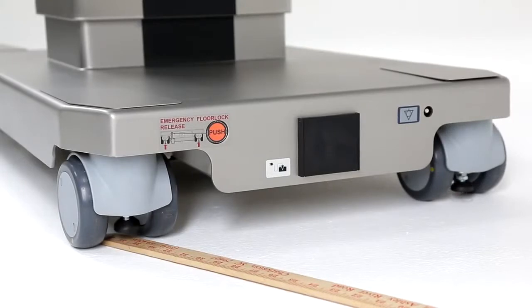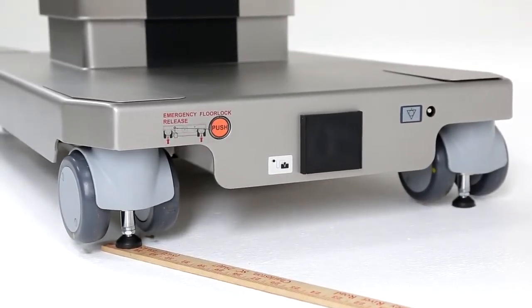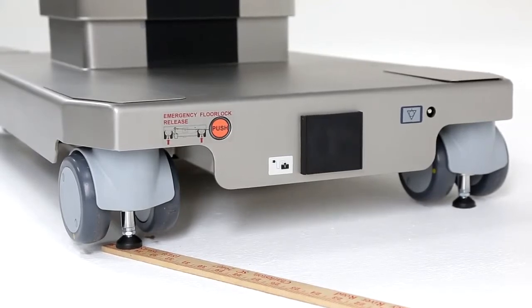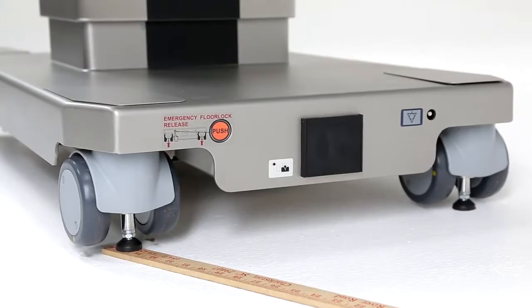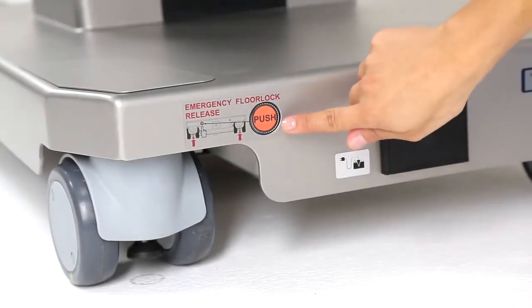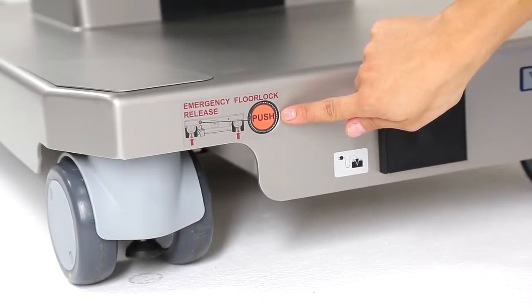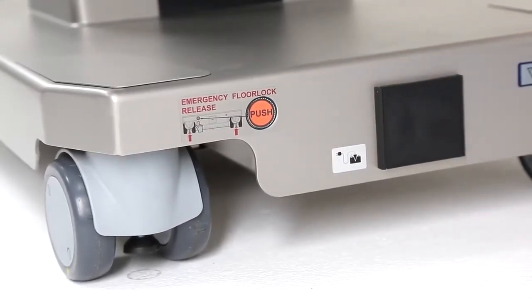Powered posts lock the table into place while compensating for any deviations in the floor of up to 0.4 inches. This advanced stability technology automatically levels the table, ensuring a stable platform. To enhance safety, Trumpf built in an emergency floor lock release to give users peace of mind, knowing the table can be quickly and safely released and moved in urgent situations.